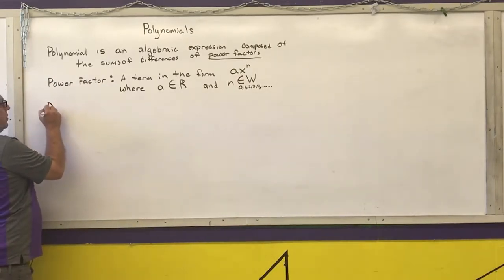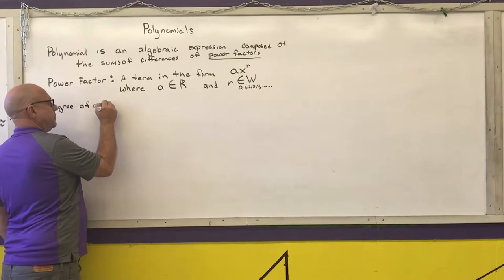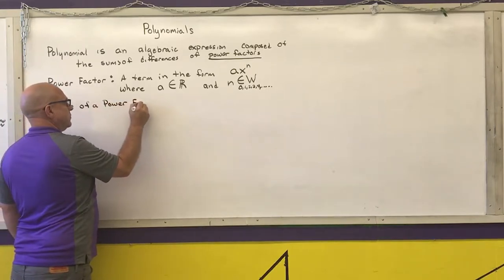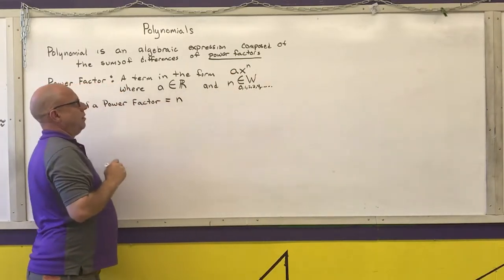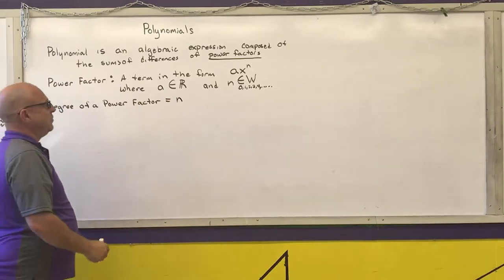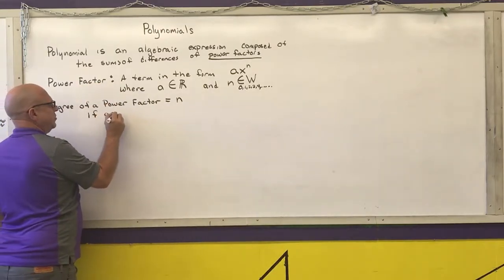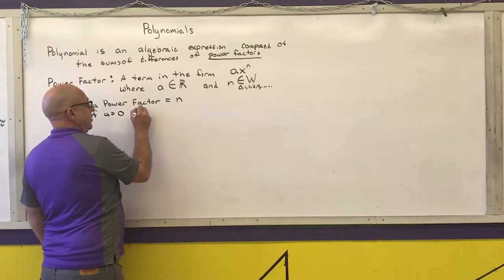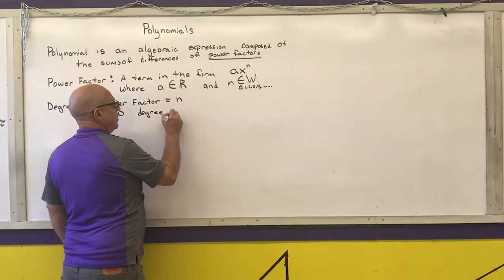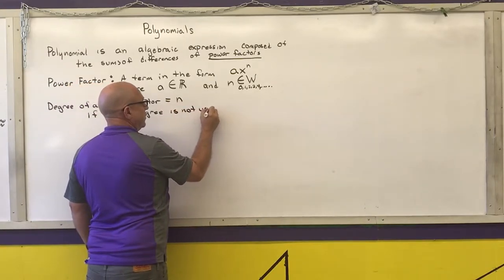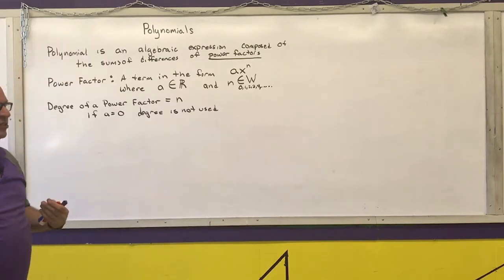The degree of a power factor is equal to whatever the exponent is on the variable, with the exception that if A equals 0, the degree is not used. So if A is 0, this whole term becomes 0 and we don't talk about the degree of something that is just 0.